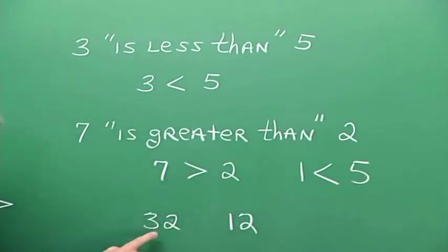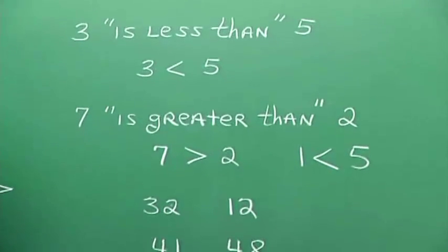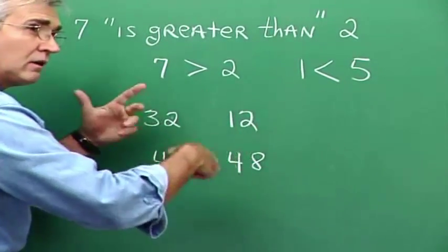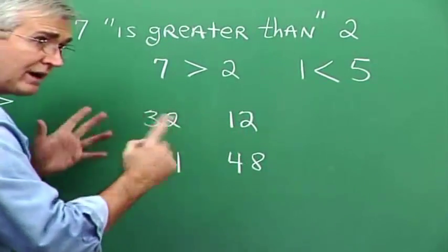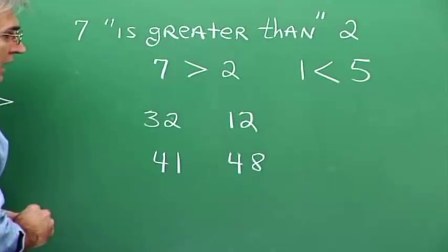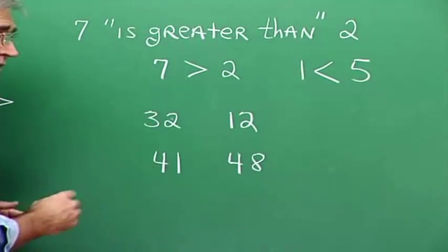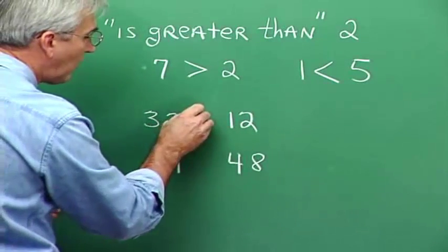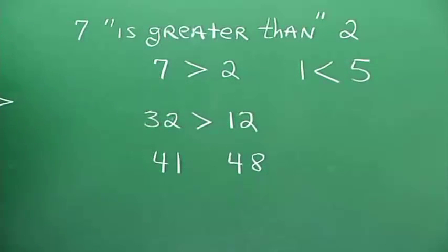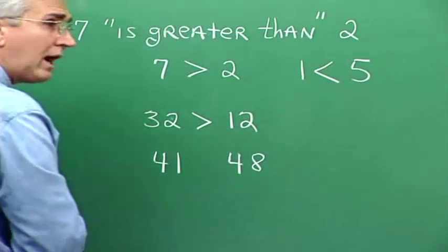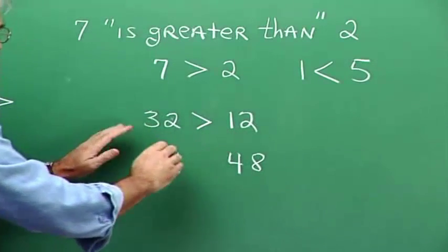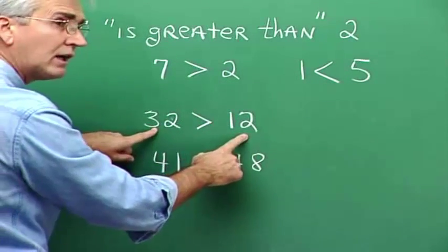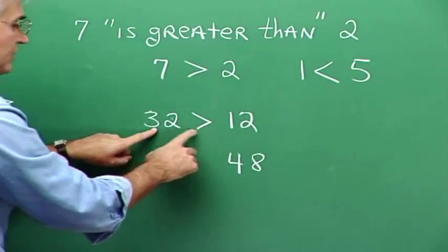Now let's talk about the relationship between these pairs of numbers. Think about 32 and 12. We want to write the symbol for less than or greater than that's appropriate. One way is to say, which one is smaller? Well, 12 is smaller than 32, so make the arrow point toward 12. Another way is to say, where do these two numbers lie on the number line? 32 lies farther to the right on the number line than 12 does. So that means 32 is greater than 12.